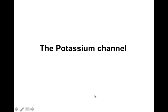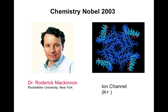Hello everybody, today we are going to talk about the potassium channel. The structure of the potassium channel was solved by Dr. Rod McKinnon from Rockefeller University in New York, and for solving this structure he got the Nobel Prize in Chemistry in 2003. The potassium channel is obviously an ion channel because it passively transports potassium ions.